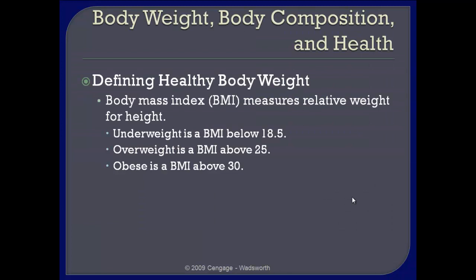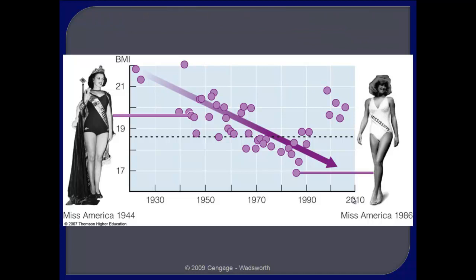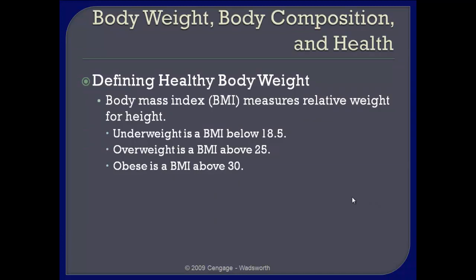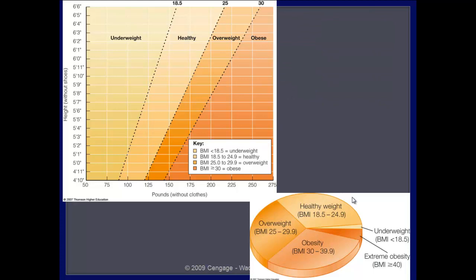Some information on BMI: in Miss America pageants, BMI has been going down — however, that's exactly the opposite of what we're seeing in society, where BMI has been going up. You do need to know that a BMI of less than 18.5 is considered underweight; underweight is when a person is really going to start being at risk for things like amenorrhea, with women not being able to reproduce. Overweight is considered to be BMIs greater than 25, and obese is BMIs above 30. You can look at your height and weight on this graph and see where you fall as it relates to being underweight, healthy weight, overweight, or obese.